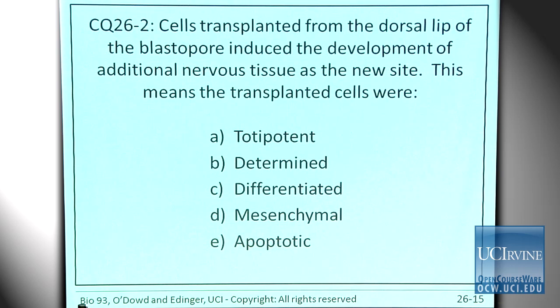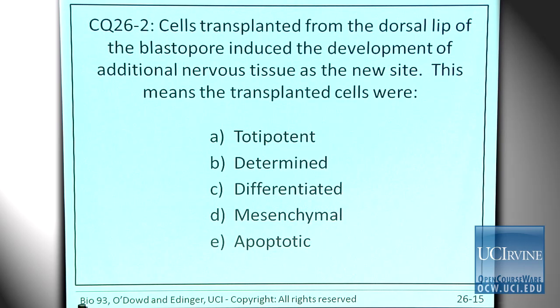Here's a question from the end of your chapter. Researchers took cells from the dorsal lip of the blastopore — which contains cells that go on to form the notochord — and moved this dorsal lip from one embryo to the opposite side of another embryo. They were able to cause nervous tissue to develop on the opposite side. You have the normal dorsal lip causing notochord and nervous tissue, and the transplanted one also causing notochord and nervous tissue on the opposite side. The question is: what were those transplanted cells — totipotent, determined, differentiated, mesenchymal, or apoptotic?